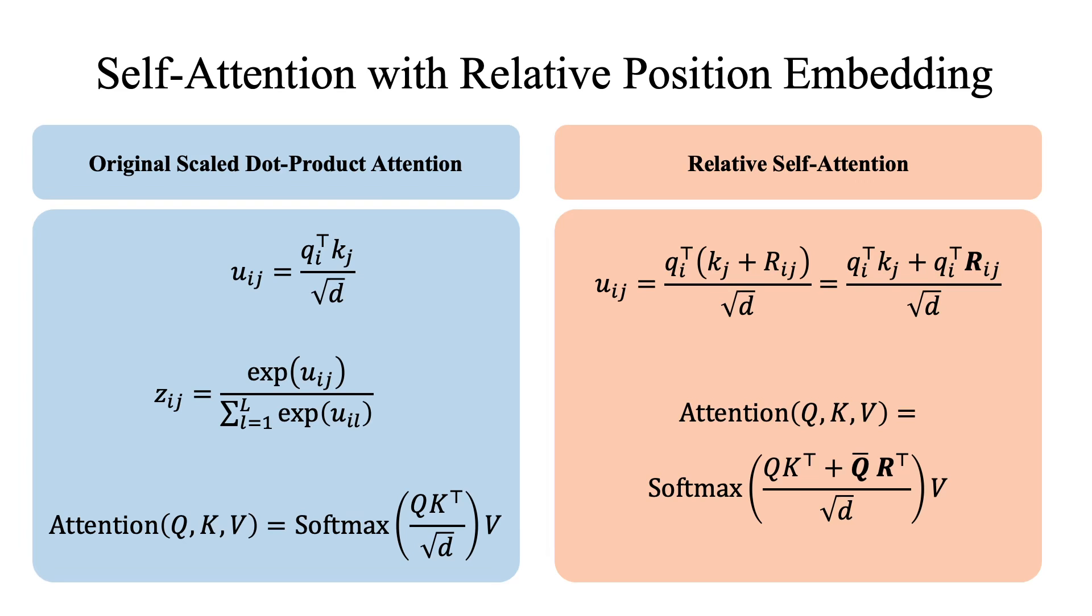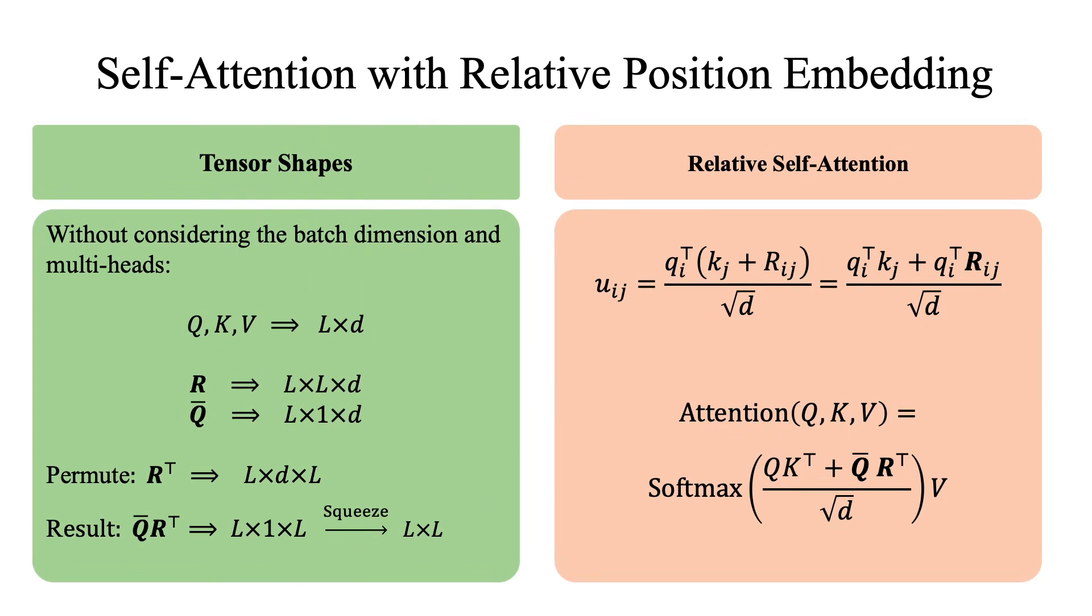So besides the dot product q_i transpose k_j as in the standard attention score, we also have q_i transpose R_ij, where capital R_ij is the embedding vector for the relative position between i and j. In matrix form, we can separate the standard attention score QK transpose and the relative attention score Q bar R transpose. The shapes of these tensors are as follows: Q, K, and V are two-dimensional tensors of size L by d, but the bold matrices Q bar and R have three dimensions. Tensor R has size L by L by d.